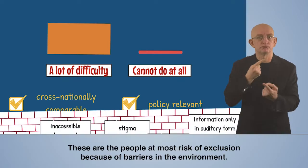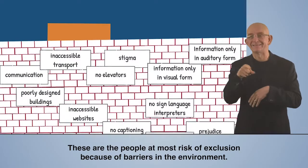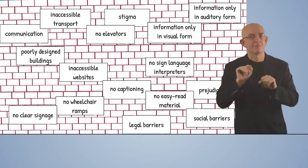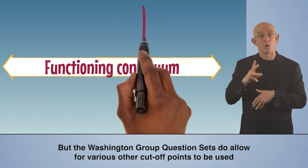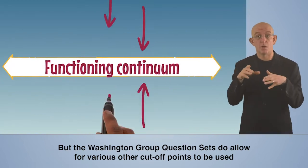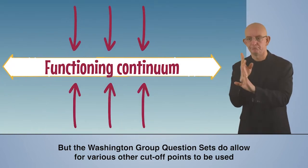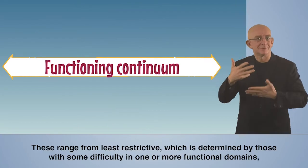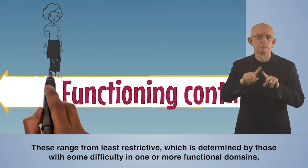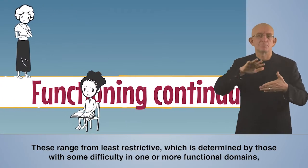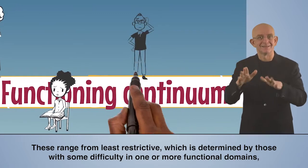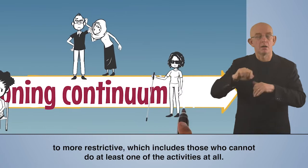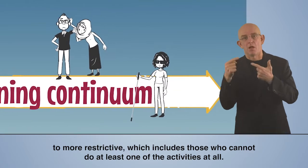These are the people at most risk of exclusion because of barriers in the environment. But the Washington Group question sets do allow for various other cut-off points to be used depending on the needs of the data collection. These range from least restrictive, which is determined by those with some difficulty in one or more functional domains, to more restrictive, which includes those who cannot do at least one of the activities at all.